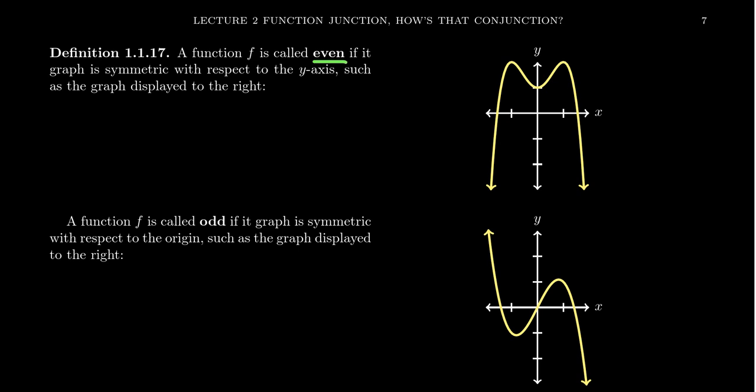The first type of symmetry is what we call even symmetry. A function is even if it's symmetric with respect to the y-axis. As you can see in the graph illustrated to the right, if you look at the y-axis, this is a line of symmetry.